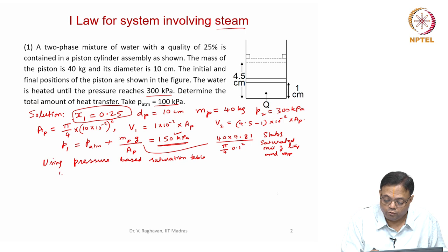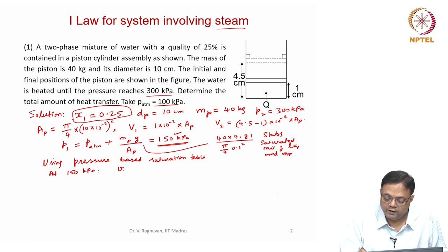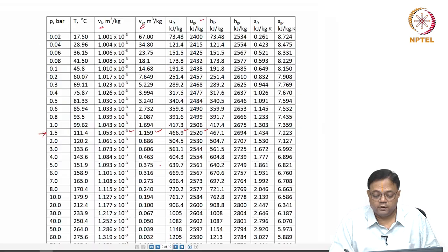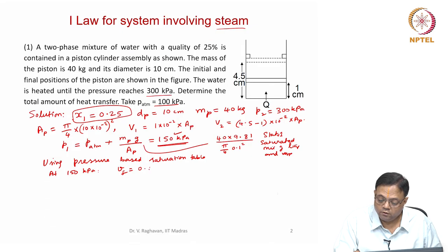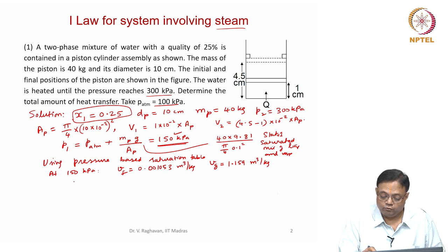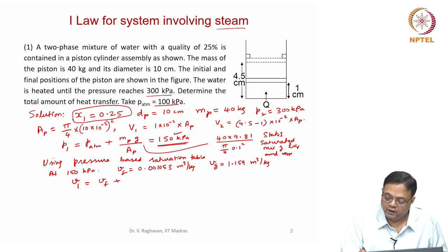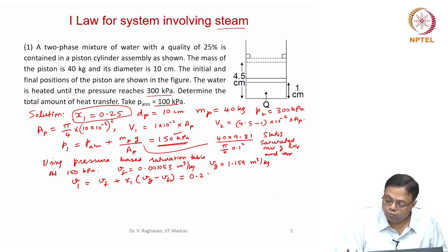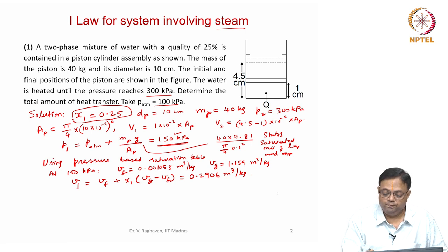At 150 kilopascals: Vf = 0.001053 m³/kg and Vg = 1.159 m³/kg. Therefore, V1 = Vf + x1 × (Vg − Vf) = 0.2906 m³/kg — that is the specific volume of the mixture at 150 kilopascals.